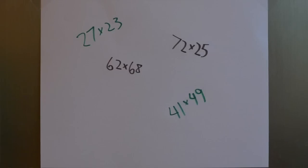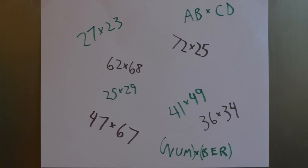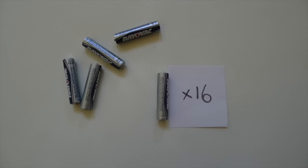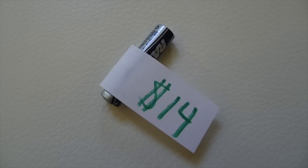There are many practical purposes for knowing how to multiply numbers in your head. For example, let's say your calculator runs out of batteries and you need to buy new batteries. Suppose this calculator needs 16 batteries that are sold individually for $14 each.